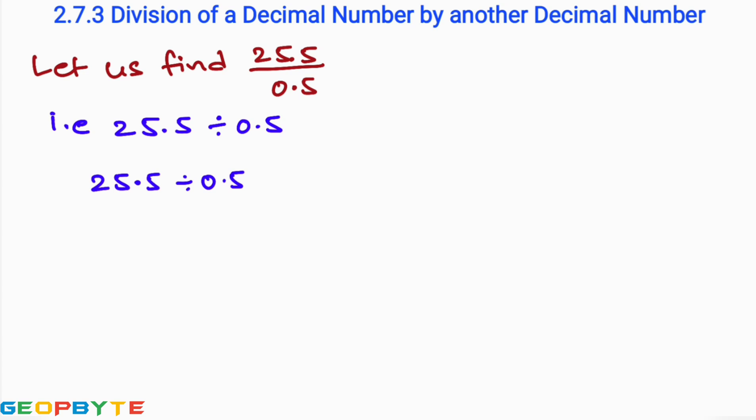Both the numbers are decimal numbers, so we need to convert these decimal numbers into whole numbers. In 25.5, after the decimal point we have one digit, so we need to divide by 10 in order to remove the decimal point — giving us 255 by 10.